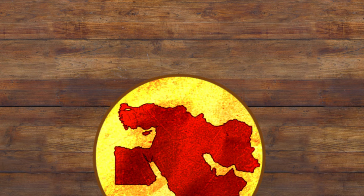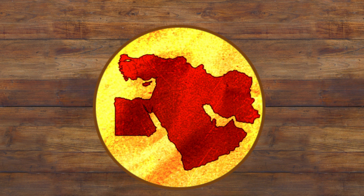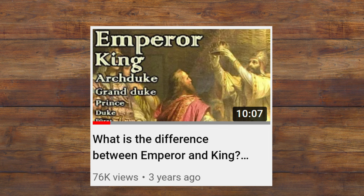Hello everyone and welcome back to Kobean History. Today's video is part of Project Middle East, which is a collaboration of history YouTubers talking about Middle Eastern history. In this video I'll talk about the different monarchal titles and roles of the Middle East, as well as the wider Arab world. A few years ago I made a similar video regarding European monarchal roles, so I'll make some comparisons between the Middle Eastern and the European ranks to see how they equate to each other.